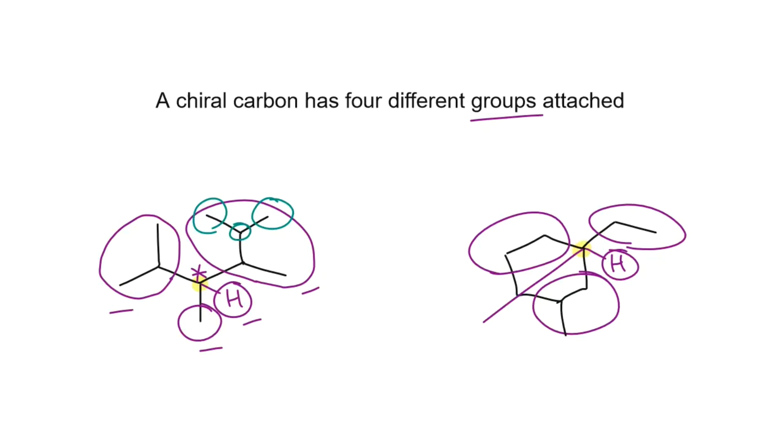Now you could check each carbon in the compound to see if it's chiral using this method, but that would take a long time, especially if you have a large molecule. So let's look at some tips and tricks for narrowing down what carbons we should ignore and which ones we should look at in order to identify any and all chiral carbons in a compound.